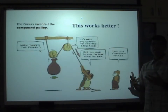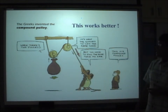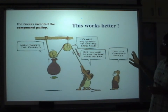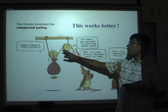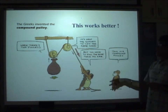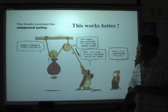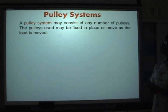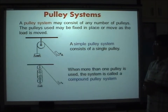Similar to compound gears, we also have compound pulleys — more than two pulleys connected together. Using a compound pulley system, you can halve the effort needed to lift the same load, though a disadvantage is that the rope must be pulled a greater distance to lift the load to the same height. Pulleys in a system may be fixed in one place or move as the load is being moved.